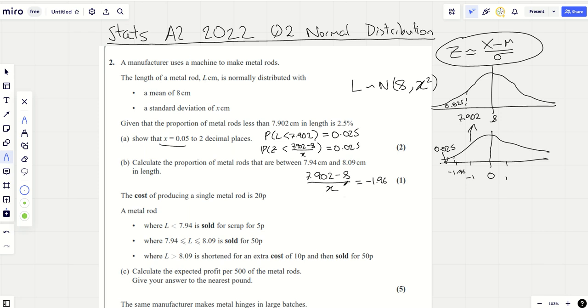Now that undoes the probability statement and says 7.902 minus 8 over x equals minus 1.96. It tells me that on this diagram I'd be here for that area to be 0.025. And going back to this diagram, what I can now do is use this statement to undo my linear code. We can just rearrange this to find x. If you do 7.902 minus 8 divided by minus 1.96, you should get the answer which comes to 0.05.